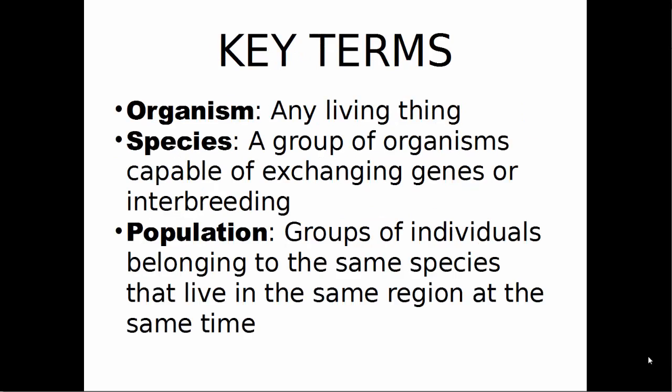Some key terms we should all be on the same page about as we go through this presentation are as follows. An organism is any living thing, so that goes from bacteria to an ant to a sequoia to a bear. If it's alive, it's an organism. A species is a group of organisms capable of exchanging genes or interbreeding. If they can produce offspring, they're of the same species.